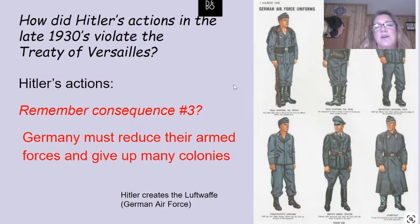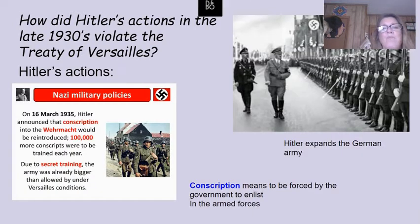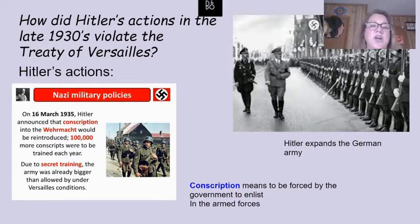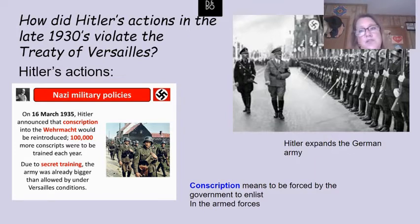Here are some uniforms created for the air force. In addition, Hitler secretly builds up the German army — the countries involved with the Treaty of Versailles were unaware. Starting in March 1935, he launches a program called conscription, which means being forced to participate in your country's armed forces.